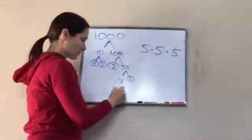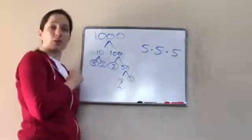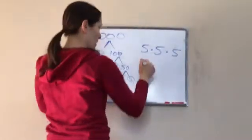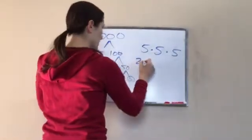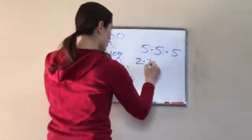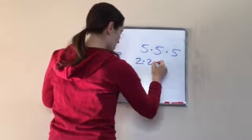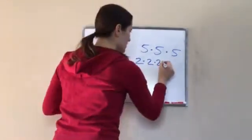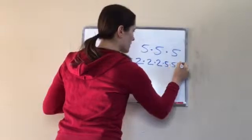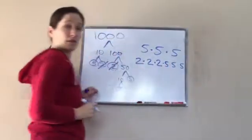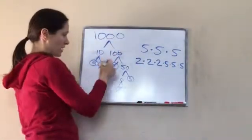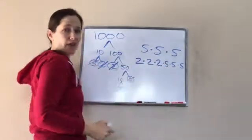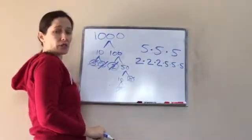Fifty breaks down: 2 times 25. And anything that ends in zero, you can always do ten times whatever — ten times five. Either of those prime? Five is. We've got to keep going with ten: 2 times 5. Okay, we're done. So I'm going to put all of these in order: 2 times 2 times 2, 5, 5, and 5. You should have gotten 2 times 2 times 2 times 5 times 5 times 5, and that equals 1,000.